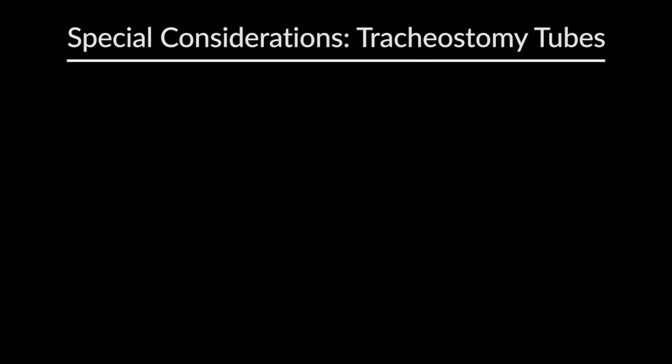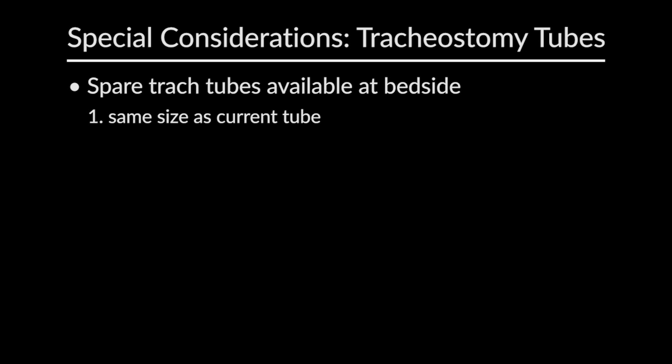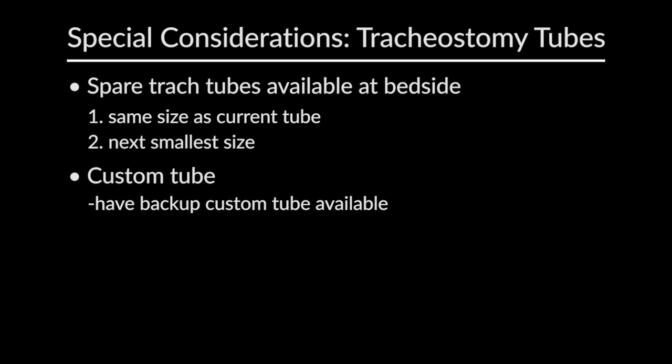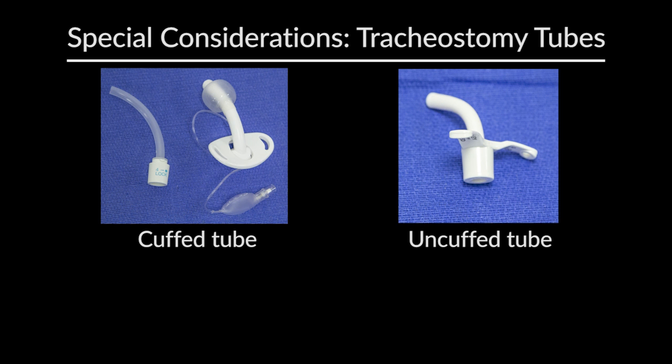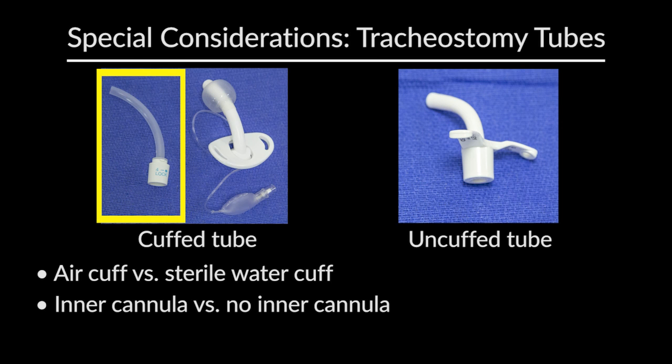All assessments should be the same for a patient with a tracheostomy tube. The only consideration we should have is whether there is a same-size tracheostomy tube at the bedside as well as a smaller-size tracheostomy tube, and if anything about that tracheostomy tube is custom. We will want to make sure that we have that custom tube at the bedside or a backup plan in case one is not commercially available. With tracheostomy tubes, we also want to note whether there is air in the cuff or sterile water in the cuff, or if it has an inner cannula or not.